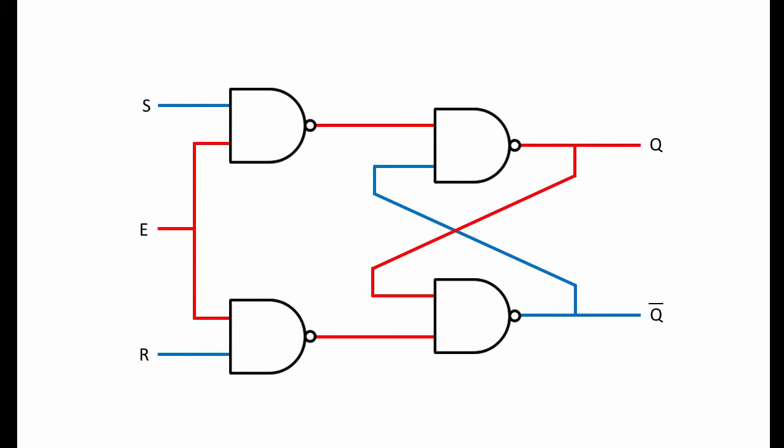By connecting an extra pair of NAND gates to the latch like this, not only have we created a third input E, we now have a new circuit in which the normal states of S and R are zero,